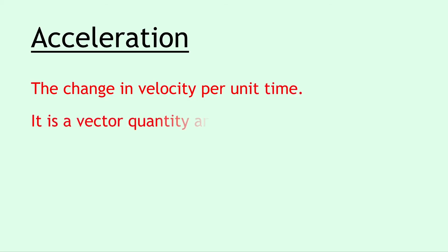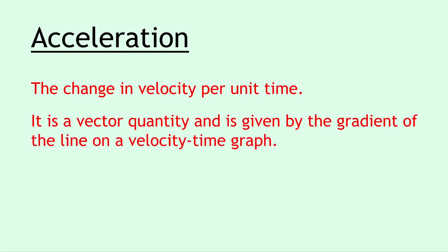Our next definition is acceleration, and this is the change in velocity per unit time, or the change in velocity each second. This is also a vector quantity, and it's given by the gradient of the line on a velocity time graph.